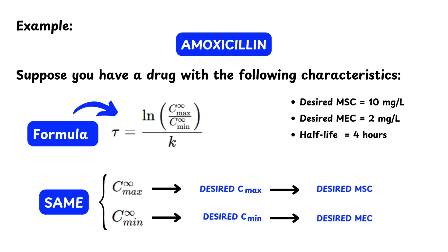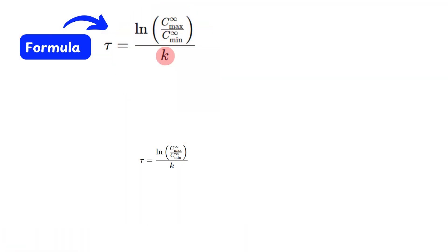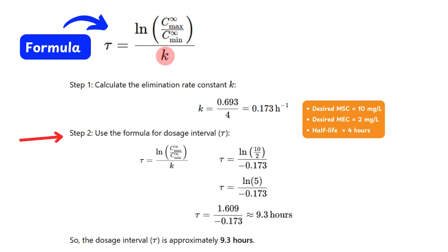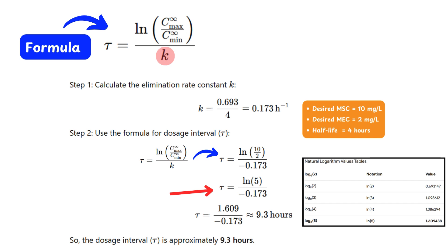The desired maximum safe concentration (MSC) is essentially the same as Cmax∞, the peak plasma concentration under steady-state conditions — the upper limit of the therapeutic window. Similarly, the desired C-minimum corresponds to the minimum effective concentration (MEC), the lower limit of the therapeutic range. Step 1: find the elimination rate constant K = 0.693 / t½ = 0.693 / 4 hours. Step 2: use the dosing interval formula, where Cmax∞ = 10 mg/L and C-minimum∞ = 2 mg/L. Applying the formula, and using ln(5) = 1.609 from the natural logarithm table, we get the dosing interval tau ≈ 9.3 hours.